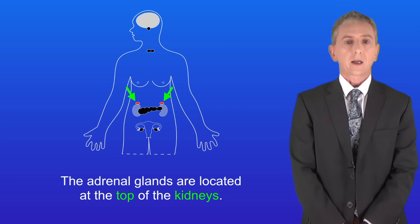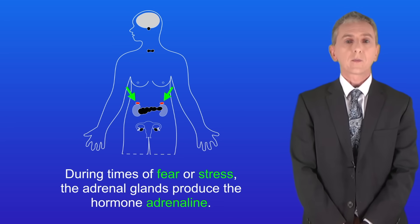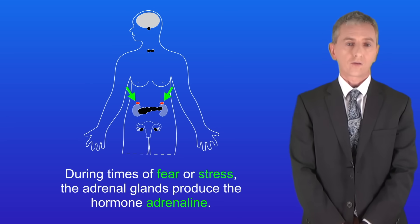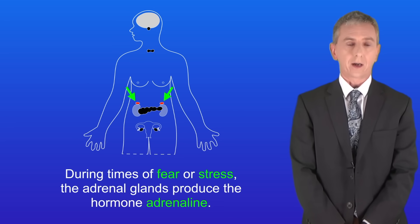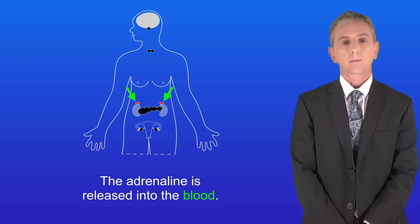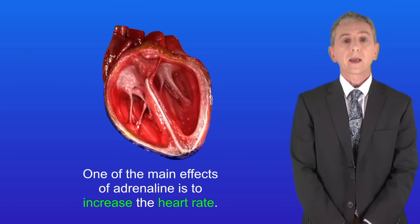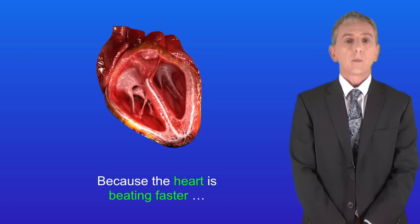The adrenal glands are located at the top of the kidneys. During times of fear or stress the adrenal glands produce the hormone adrenaline. The adrenaline is released into the blood. One of the main effects of adrenaline is to increase the heart rate.